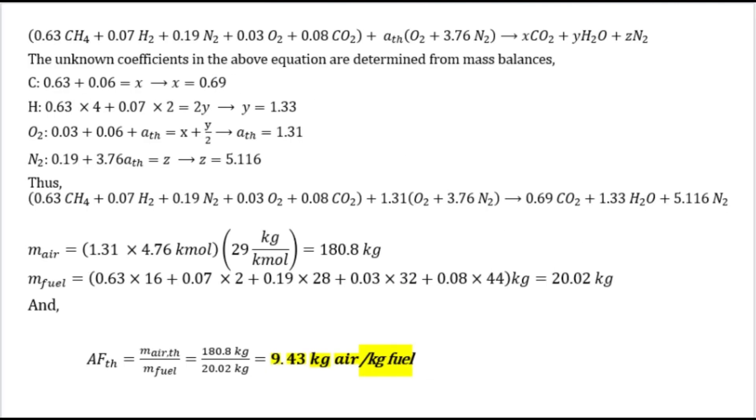The unknown coefficients in the above equation are determined from mass balances. For carbon: 0.63 plus 0.06 gives x equals 0.69. For hydrogen: 0.63 times 2 plus 0.07 times 2 equals 2y, so y equals 1.33.